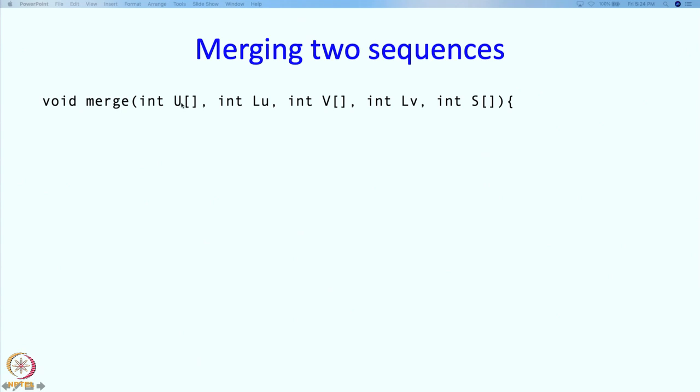Again let me explain. U is the first sequence that we want to merge, its length is LU. V is the second, its length is LV, and S is the array into which the result is supposed to go.